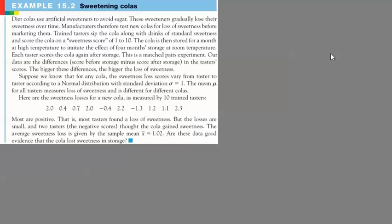So let's look at this example here. We have an example where there's a company, they're talking about diet colas using artificial sweeteners, but these are artificial sweeteners that gradually lose their sweetness. So manufacturers are always testing the sweetness by using tasters to score these colas on a scale of 1 to 10 for sweetness.